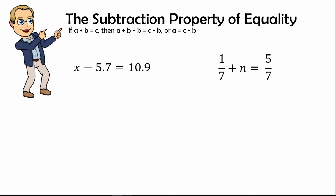We look at our variable x and see what's attached to it. We see that 5.7 is attached by subtraction, so the inverse of subtraction is addition. We are going to add 5.7 to both sides of the equation.